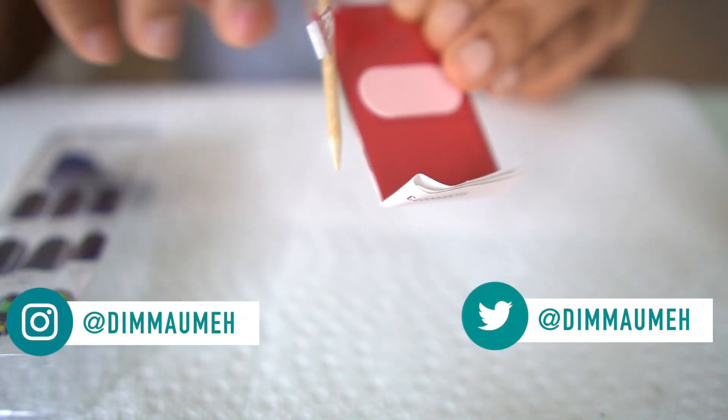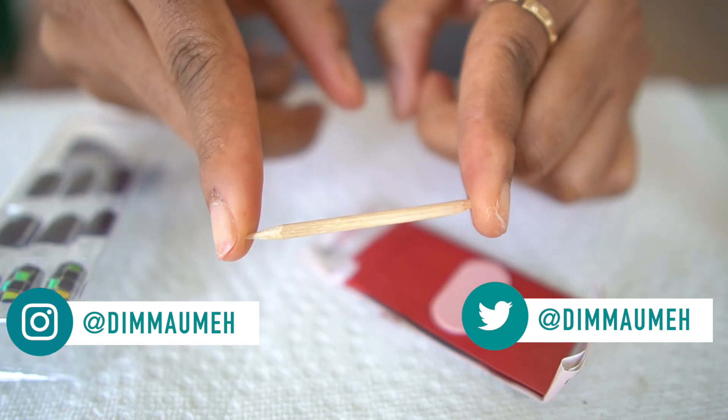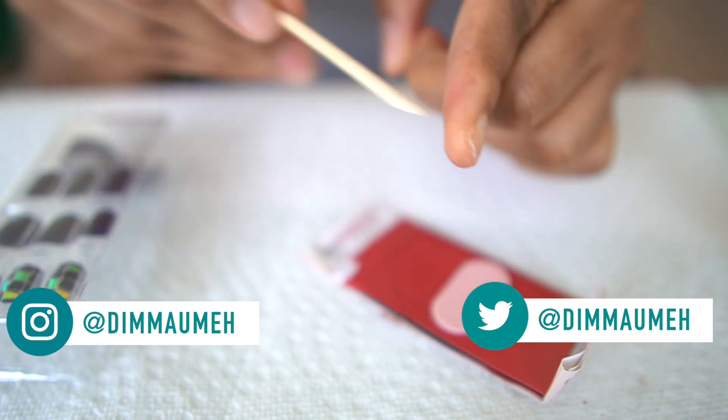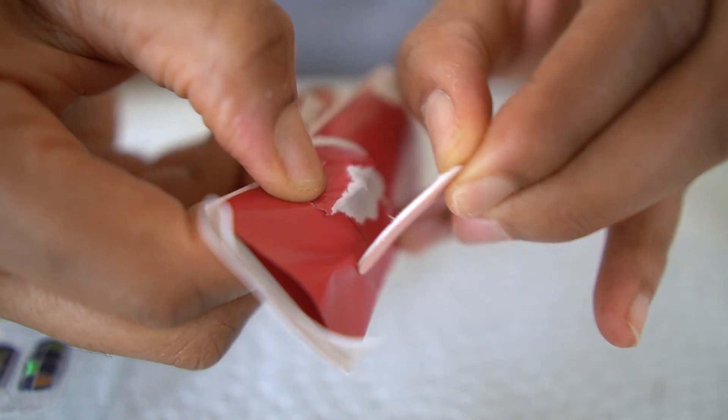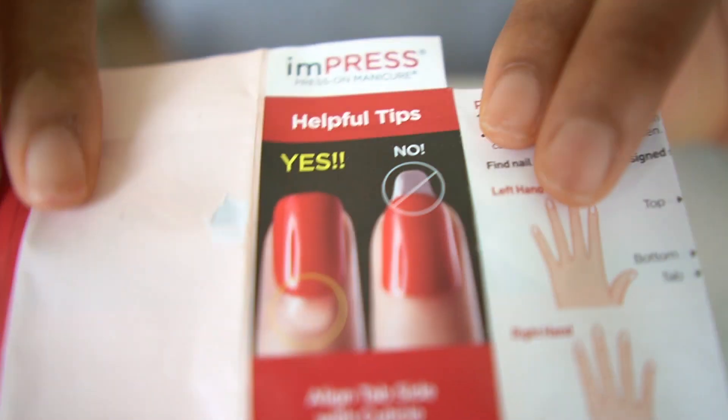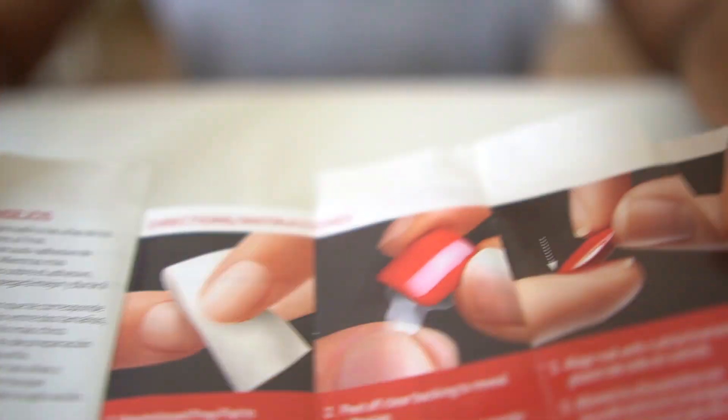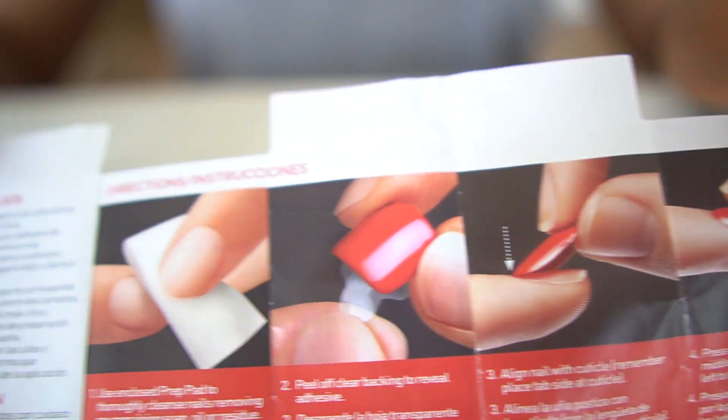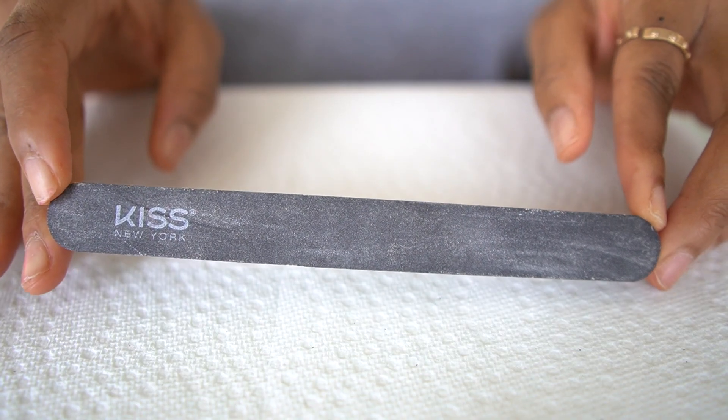Which I'm taking off right now, a little wooden thing for your cuticles, and then it comes with a little nail file that I will not be using because I have my own nail file, and some instructions. Just open it up, it shows you how to use the nail and all of that.